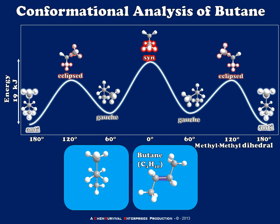So as you can see, it's all about the relative position of the larger groups in our Newman projection that tells us whether we're in anti, eclipsed, gauche, or syn conformations. And a molecule like butane is an excellent example of this. I hope this was helpful to everybody. I'm Professor Davis from ChemSurvival.com and the YouTube channel ChemSurvival. I'll see you next time.